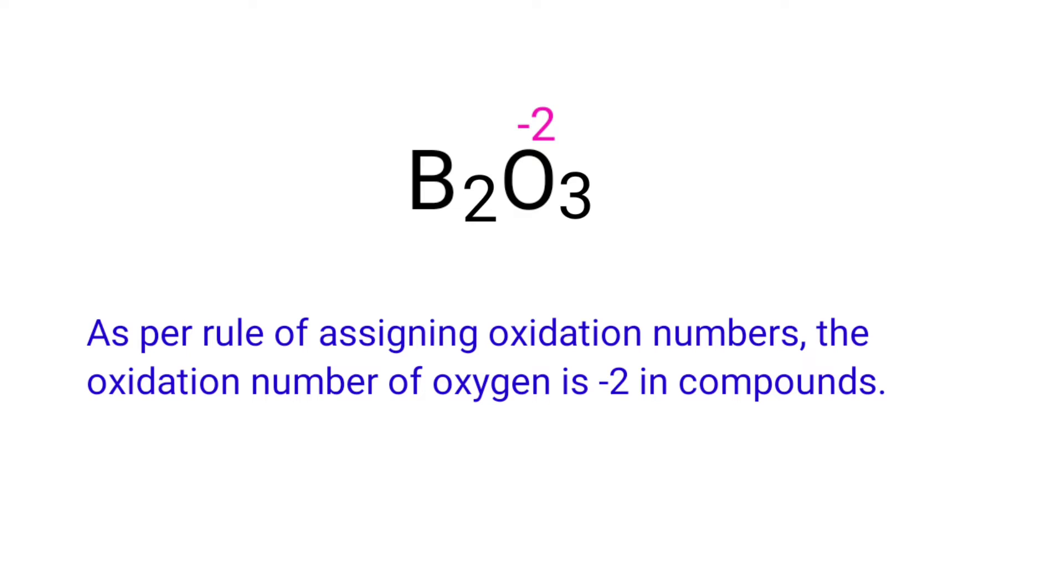We can write the oxidation number of the element above its symbol and the total number of the oxidation number of the atoms below its symbol.